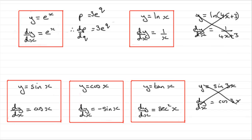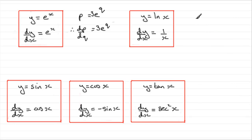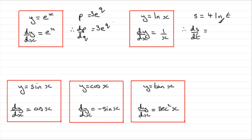Now if I had s equals 4 times the natural log of t, I could use this idea because I've got a single letter here. We would therefore have that ds by dt would equal 4 times the differential of the natural log of t, which is 1 over t. So it would be 4 times 1 over t, giving us 4 over t.